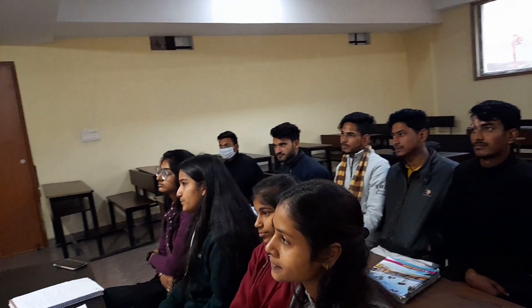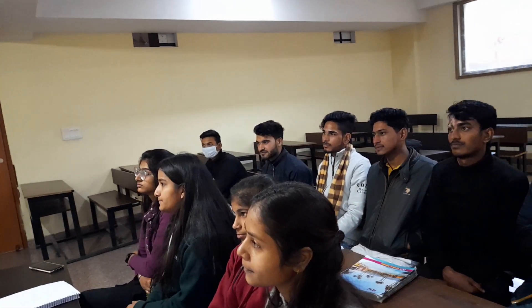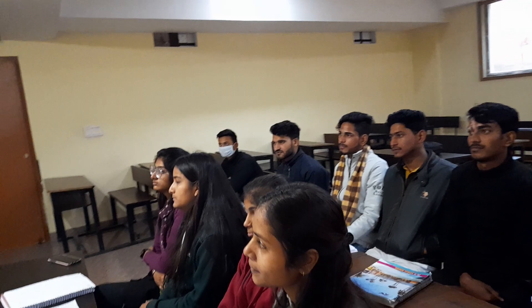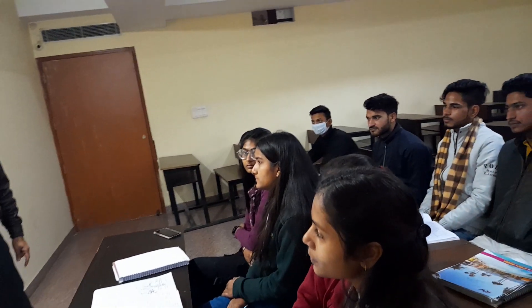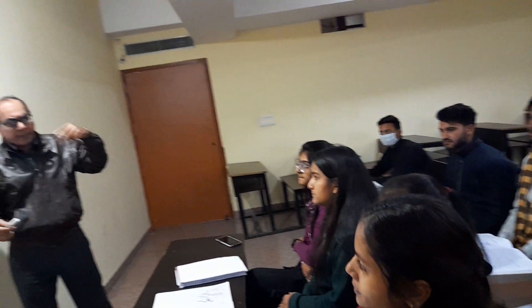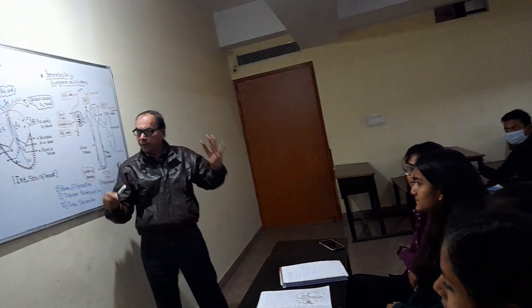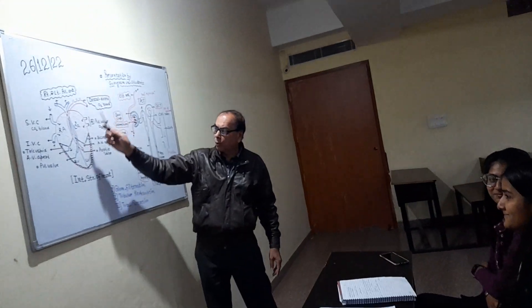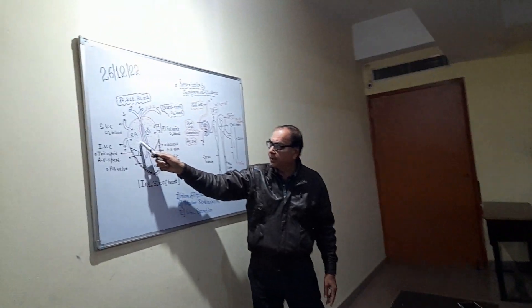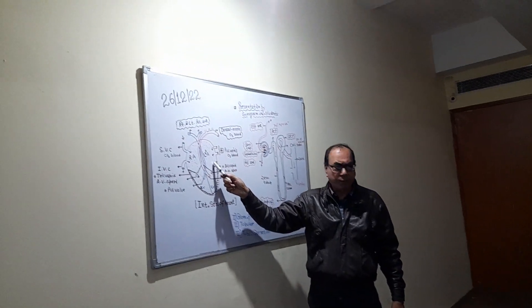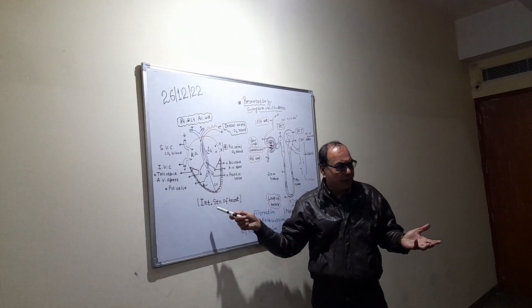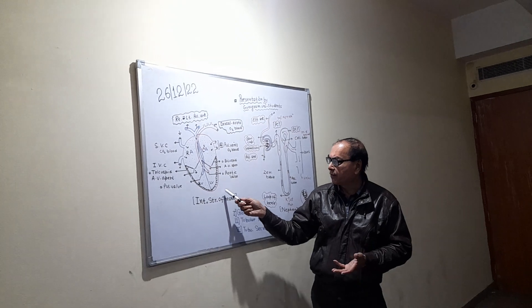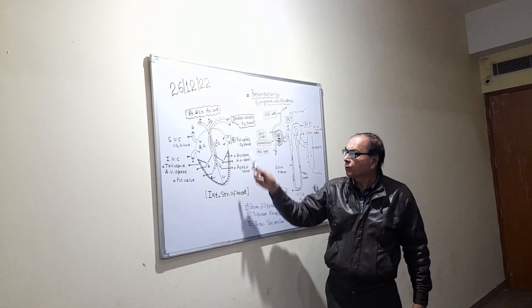The right part contains the CO2 blood, the left part contains the CO2 blood. It has four channels — the upper parts are called the right auricle and left auricle, and the lower parts are called the right ventricle and the left ventricle.